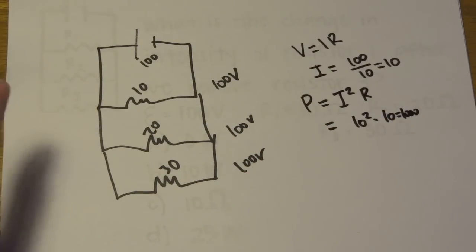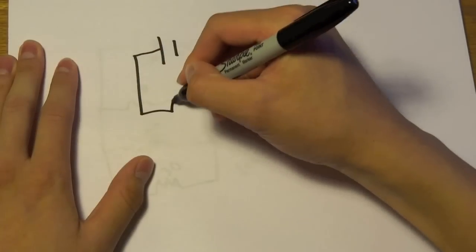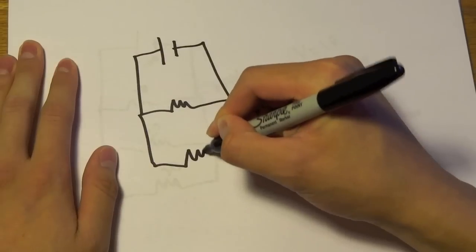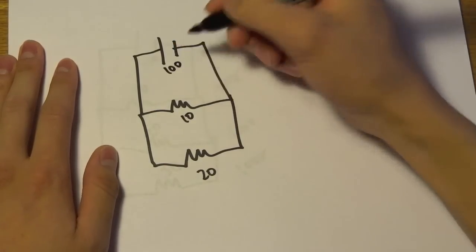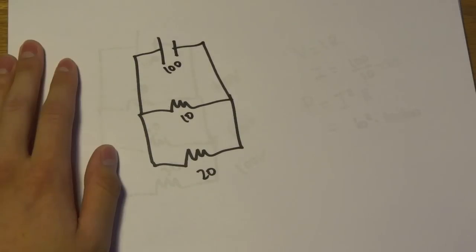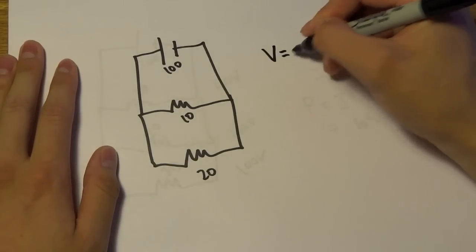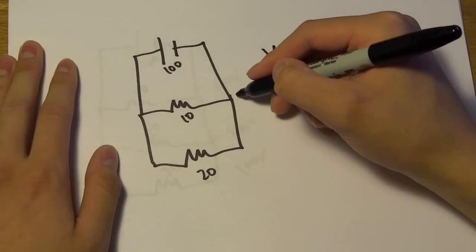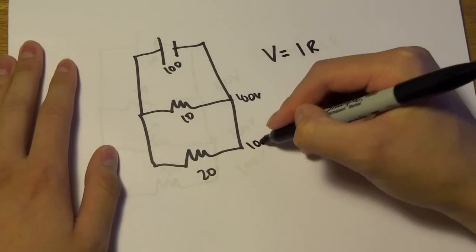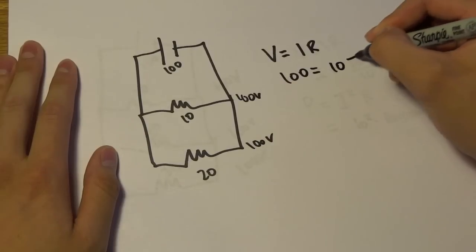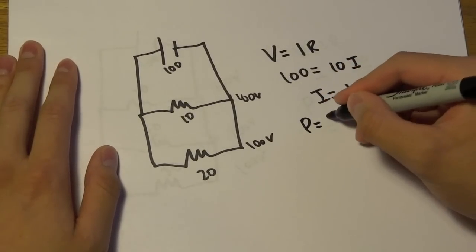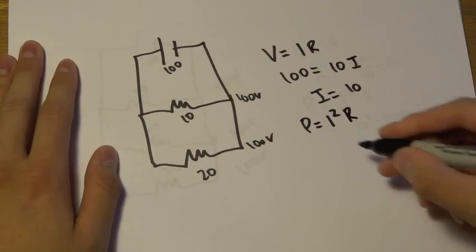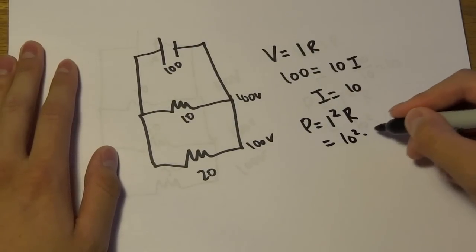And that would be if we had the same circuit, but now we took out the very last resistor. So this is 20, this is 10, and this is 100. And we took out the 30 ohm resistor. And so we'll do the same thing. So V equals IR. And you see that they're in parallel. So we'll have 100 volt drop in here, 100 volt drop in there. So 100 equals 10 times I. I equals 10. And from our equation again, P equals I squared R. So I squared R would be 10 squared times 10.